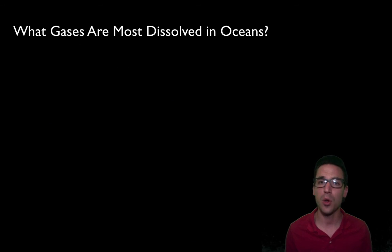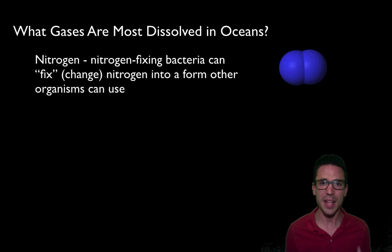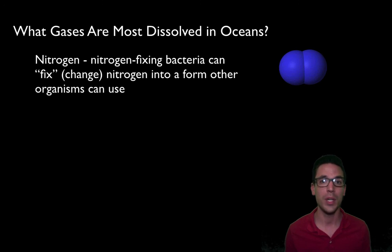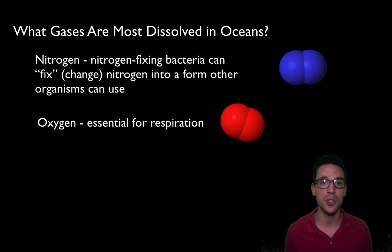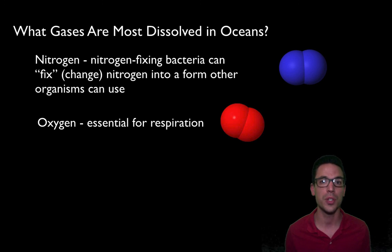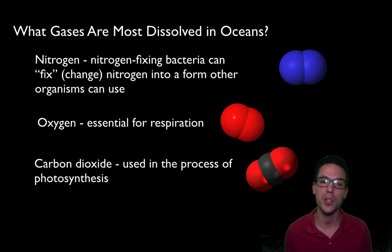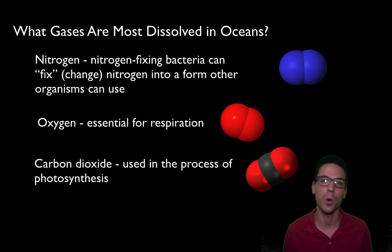The three most important gases dissolved in the oceans are nitrogen, oxygen, and carbon dioxide. Nitrogen is used by bacteria that fix it into forms other organisms can use — all organisms need nitrogen for DNA and proteins. Oxygen is essential for cellular respiration in marine organisms. Carbon dioxide is essential for photosynthesis, kicking off the productivity of organic compounds that other organisms can use.